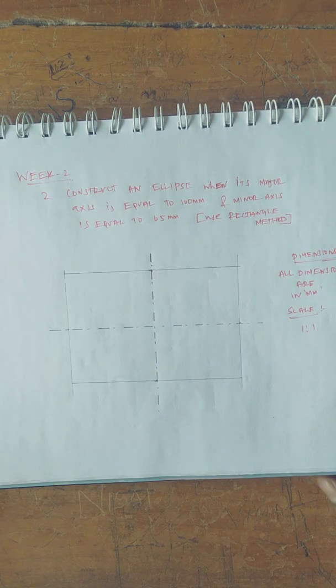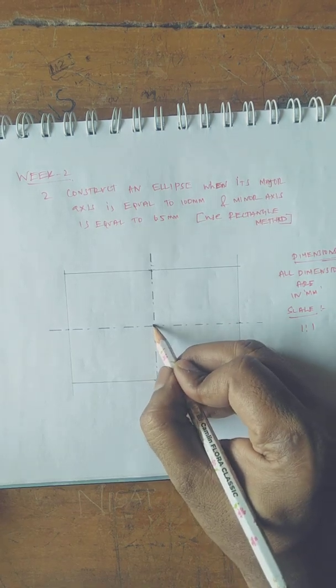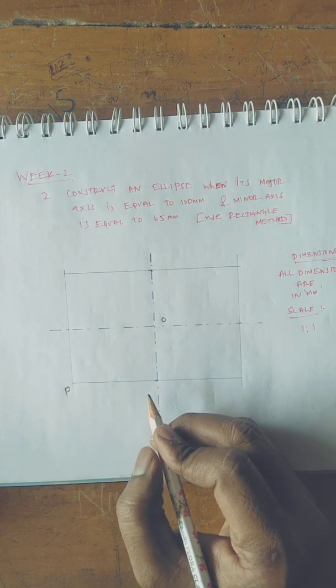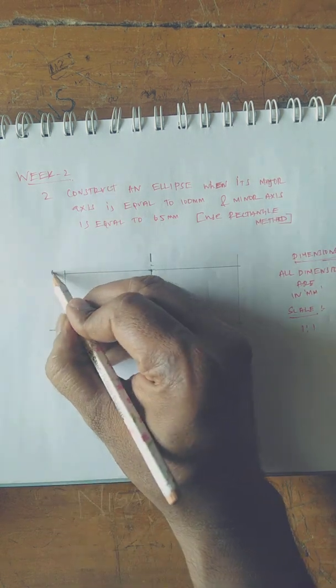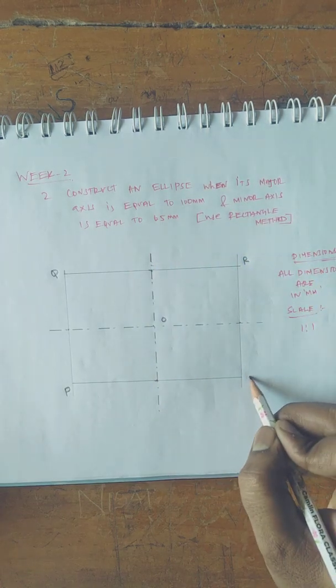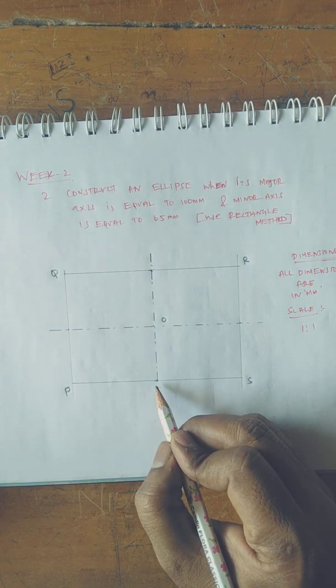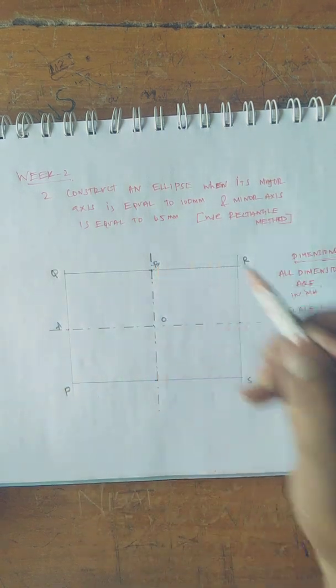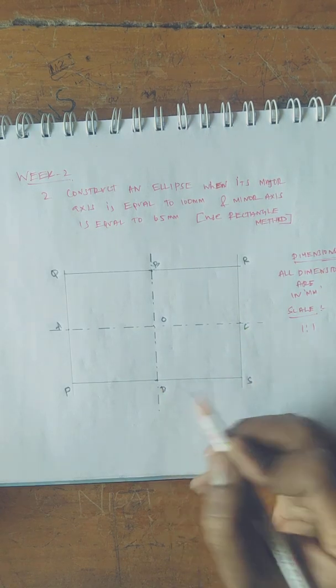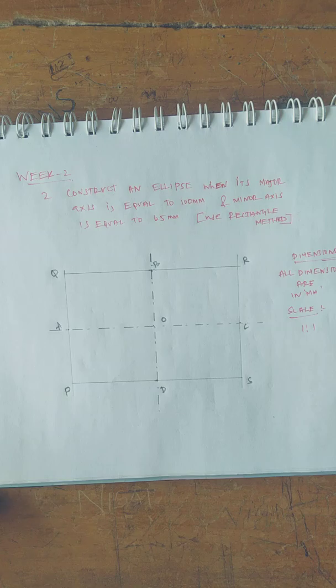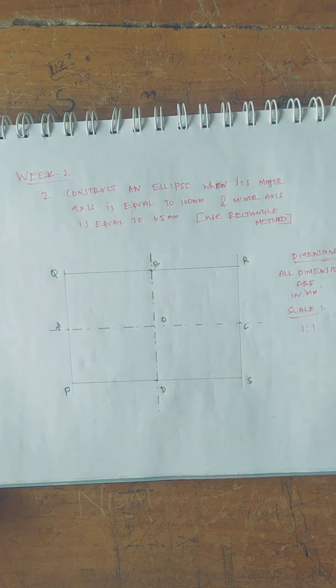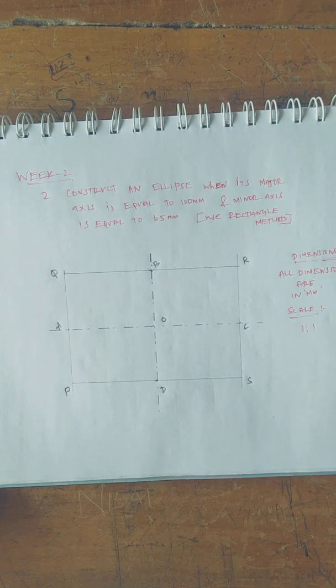Now let us name the points. At the center is O, and this is P, Q, R, S. A, B, C, D are the edges - A and C are edges for major axis, and B and D are edges for the minor axis.